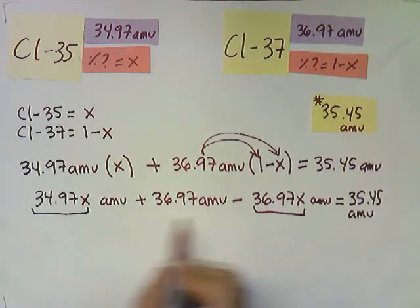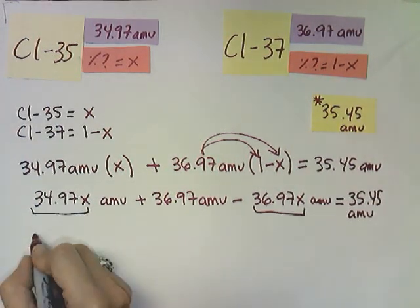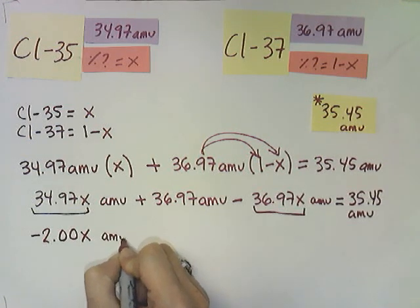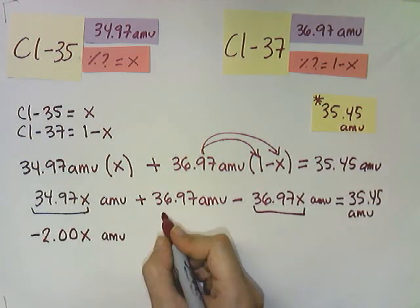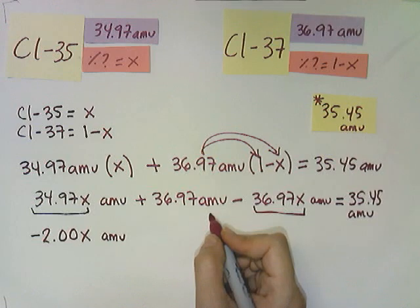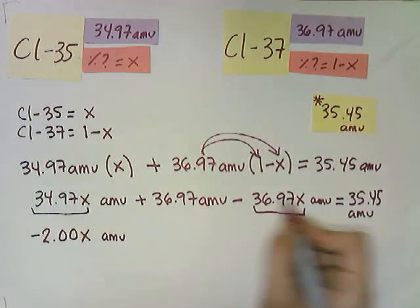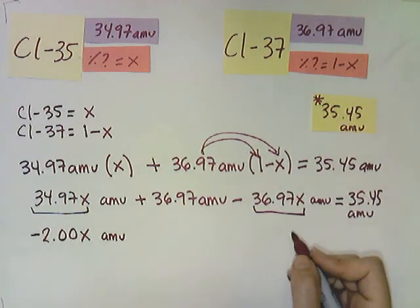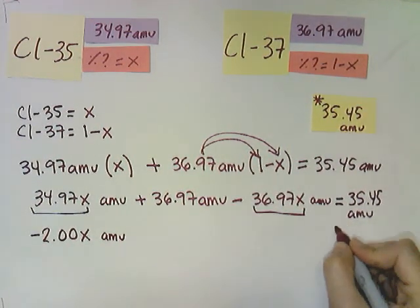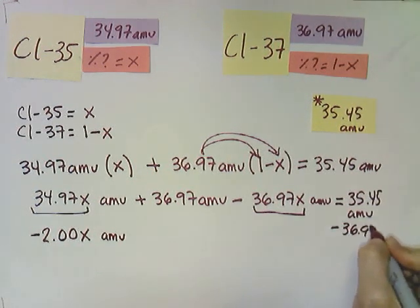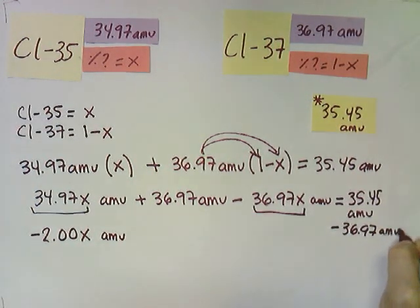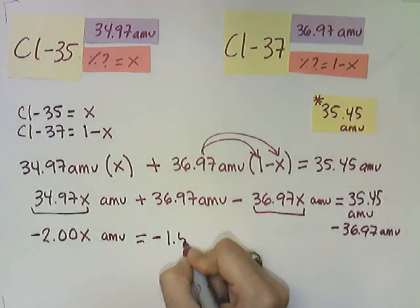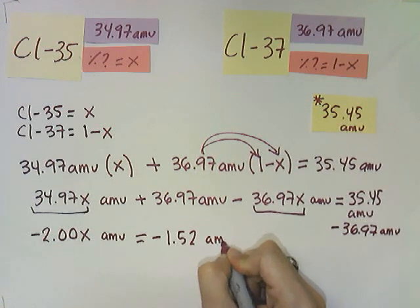These are common terms, and if I subtract this, I would get negative 2.00x with our units here. And this is a term that I can't really do anything about here, but I see that it's a common term with this one. It's just a variable. So I can move it to the other side. I can subtract minus 36.97 AMUs, and when I subtract this, I will get negative 1.52 AMUs.